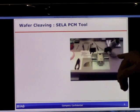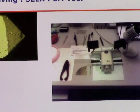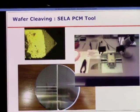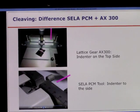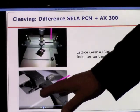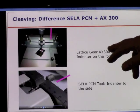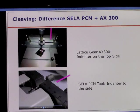The SELA MC600 has a PCM tool for pre-cleaving. With the PCM tool in combination with pliers and a diamond indenter, you can very quickly divide the whole wafer and separate stripes and samples as needed. Now I want to speak about the difference between the SELA PCM tool and the AX300. They look similar but have one important difference: the Lattice AX300 makes the indentation on the top side, while the PCM tool from SELA always indents from the side. This is an important difference, and we can use it.